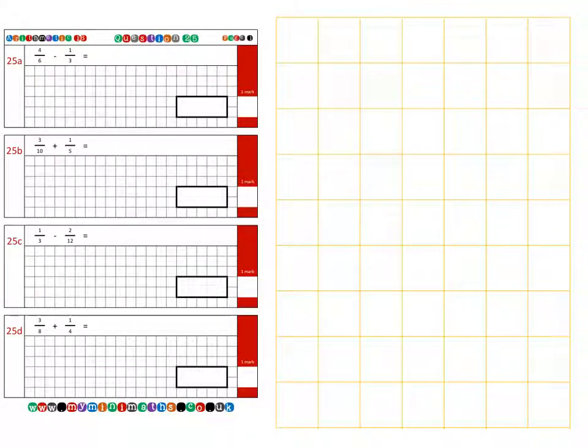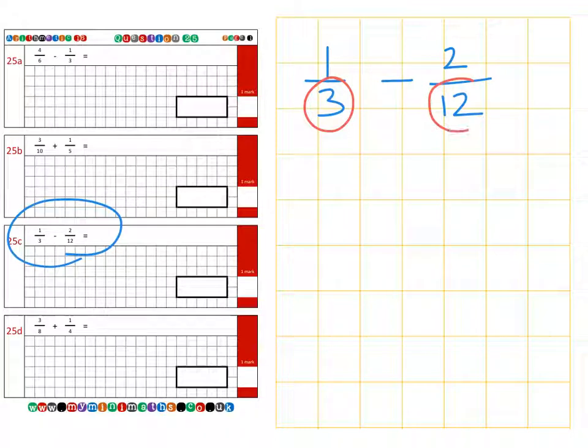Next is question 25c which is one third and we're subtracting two twelfths. Now the same as before we need to make sure that these two denominators are equal, they are common to each other. So if I multiply this three by four to get twelve so it matches the other side.